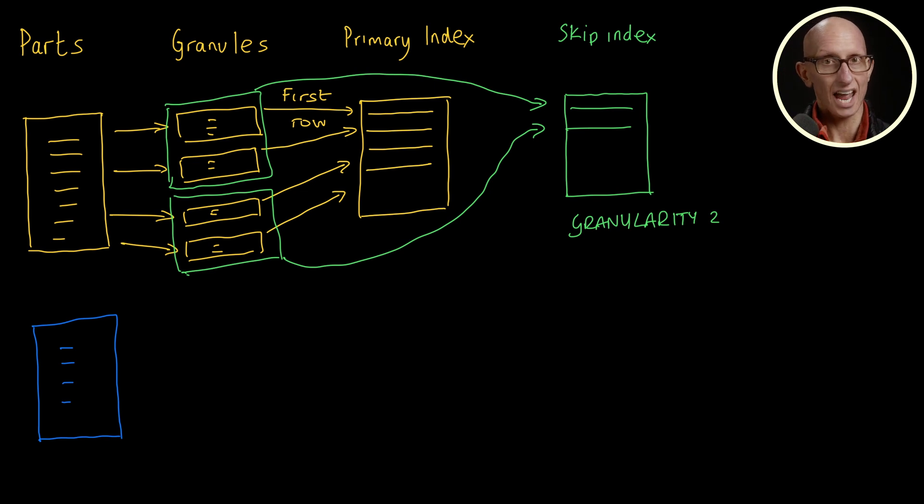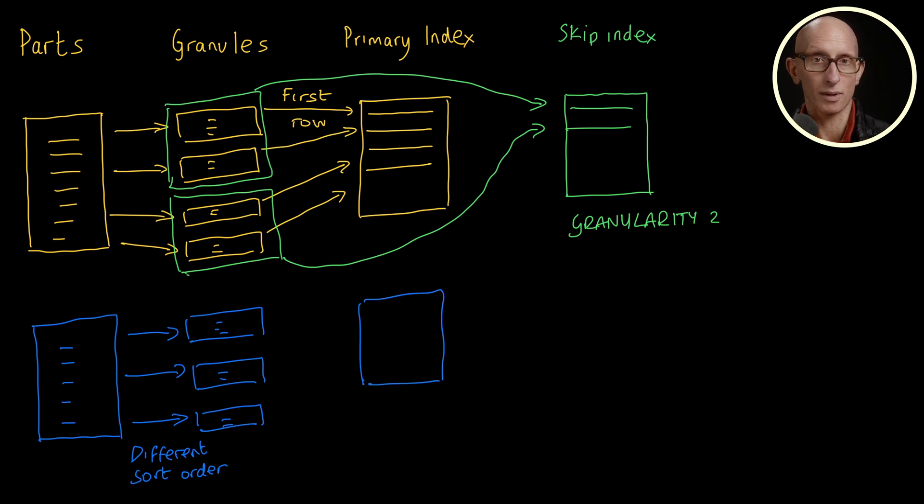They create a consistent, up-to-date, but hidden copy of the data from the original table sorted in a different order and therefore with a different primary key. ClickHouse will automatically work out whether to run queries against the original table or this shadow copy. And for this technique in particular, we are trading off disk space for faster query performance.